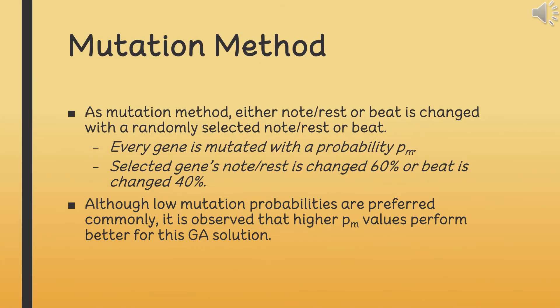To mutate a gene, either its note or rest, or its beat is exchanged with a randomly selected note or rest or beat. Each gene of each individual is mutated with a probability PM. 60% of selected genes are mutated by changing its note or rest. It is observed that higher mutation probabilities, like 0.4 or 0.5, perform better.